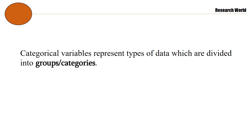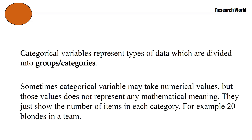Categorical variables represent types of data which are divided into groups or categories. Sometimes a categorical variable may take numerical values, but those values do not represent any mathematical meaning — they just show the number of items in each category, for example, 20 blondes in a team.